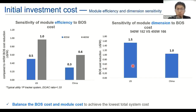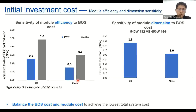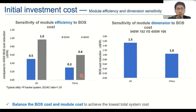One very important part is the system cost. I'll introduce a sensitivity analysis on initial investment cost — one for efficiency impact on BOS savings, and another for module dimension impact on BOS savings. This case is based on two countries: the US representing a very high system cost, and China as a relatively lower system cost. If we increase module power from 445 to 455 watts, we save BOS costs about 0.5 cents per watt in the US, and in China it's about half of that.